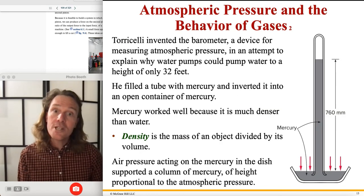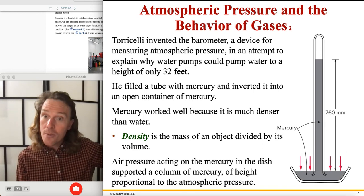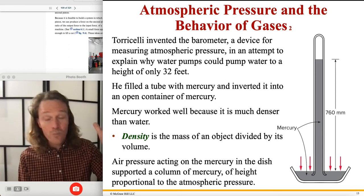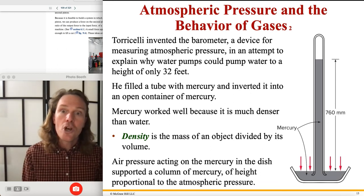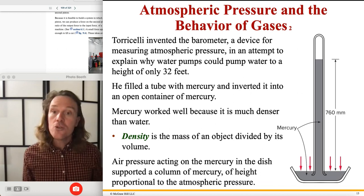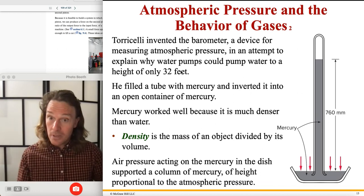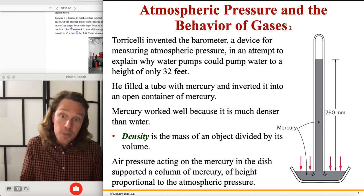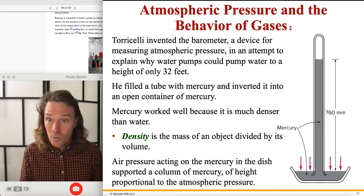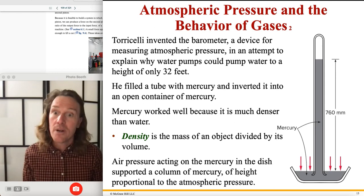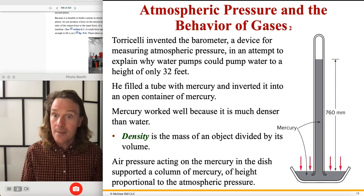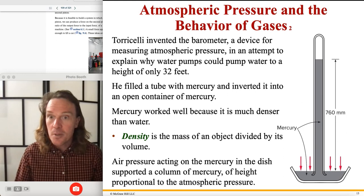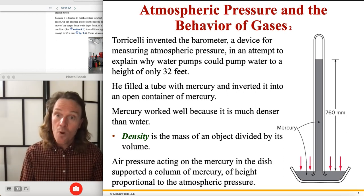Torricelli invented the barometer — a device that balances a column of liquid against the column of air we all live at the bottom of. It turns out that swimming 32 feet down into water is equivalent in pressure to living at the bottom of the ocean of air — both equal one atmosphere, 101,000 pascals. That shows how fine-tuned we are as biological organisms to this particular pressure. Swimming 32 feet deep is very hard for people — that's three times deeper than a deep swimming pool — and that's just doubling the atmosphere.